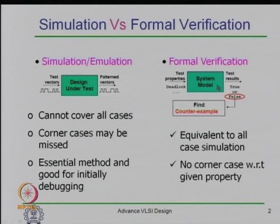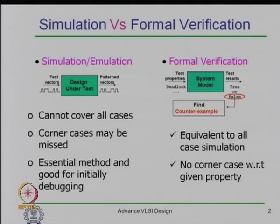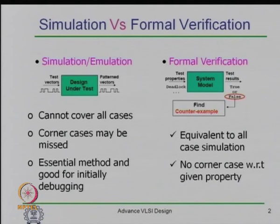To model the behavior of a sequential circuit we can model it as a finite state machine. Properties are things like: for a traffic light controller, it should not give a green signal to both crossing roads simultaneously. Another property could be that signals follow the pattern red-yellow-green-red-yellow-green.